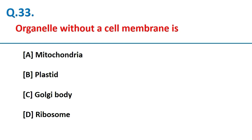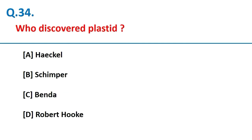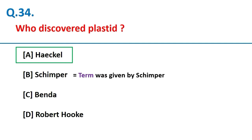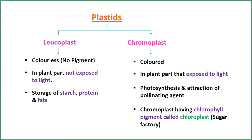The organelle without a cell membrane is the ribosome. Plastids were discovered by Haeckel, and the term 'plastid' was given by Simper. Plastids are found in plant cells but not in animal cells. They are of two types: leukoplast and chromoplast. Leukoplast is colorless, found in parts not exposed to light such as roots and underground stems, and acts as storage for starch, protein, and fats. Chromoplast is colored, found in parts exposed to light such as leaves, fruits, and flowers, involved in photosynthesis and attracting pollinators. Chromoplast containing chlorophyll pigment is called chloroplast, also known as the sugar factory.